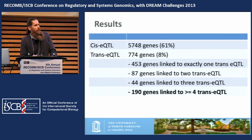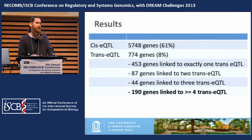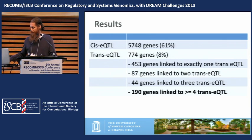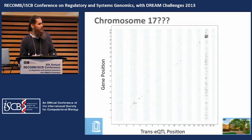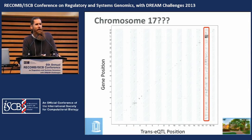When looking at the trans EQTLs, we started noticing that a large number of genes seemed to be associated with many loci. A quarter of the genes with trans associations were associated with four or more loci affecting their downstream expression. When we plotted gene positions versus where these trans EQTL associations were, we saw a huge trans band that effectively covered all of chromosome 17.